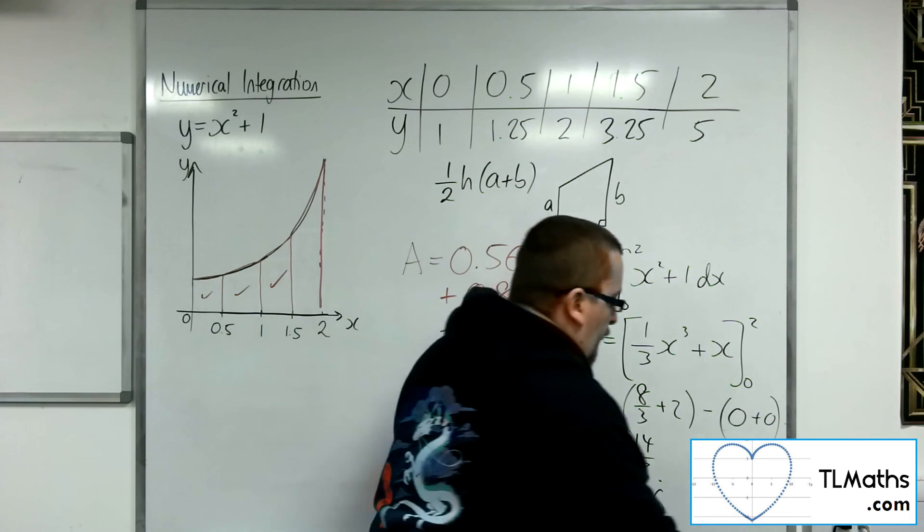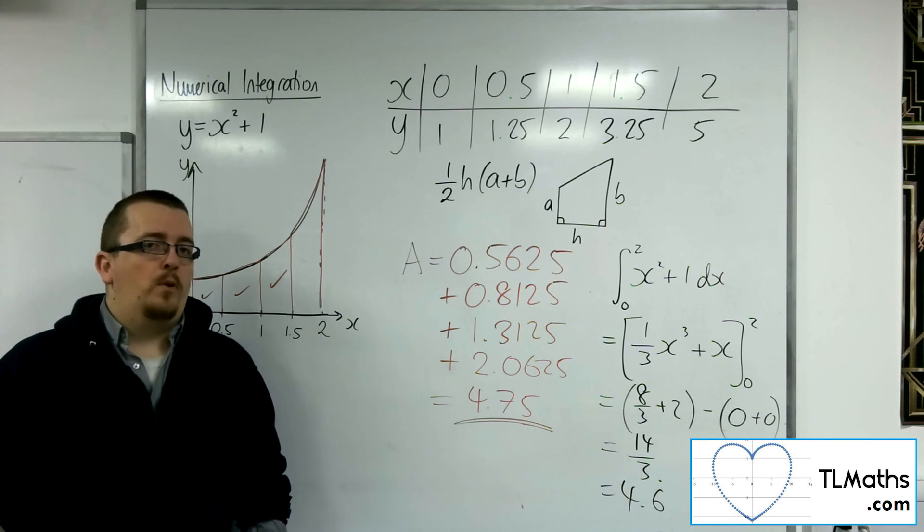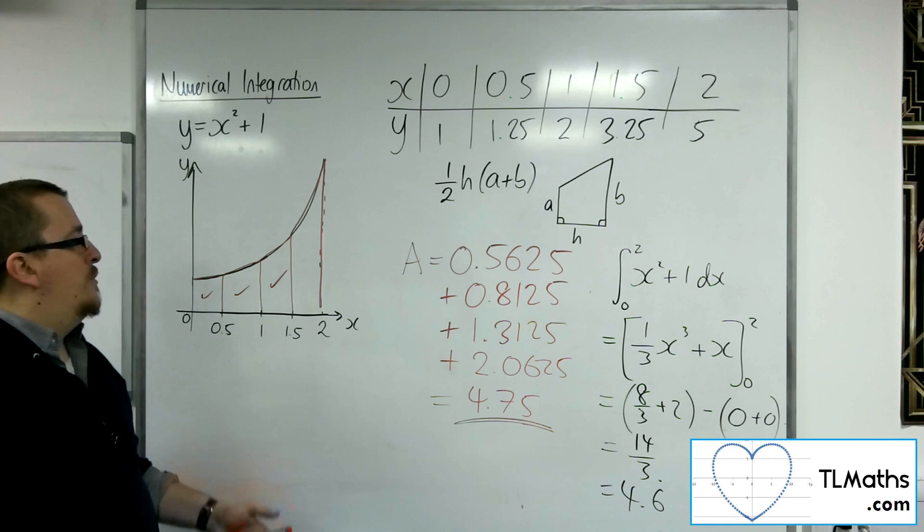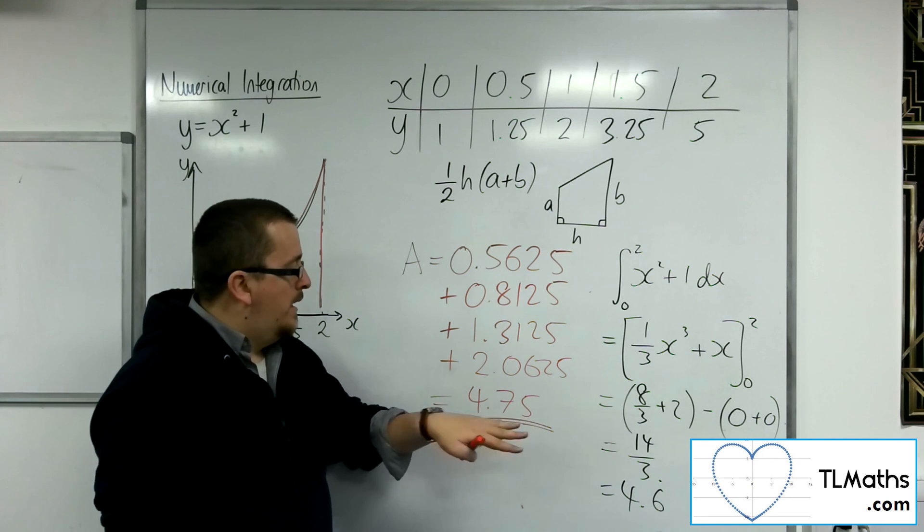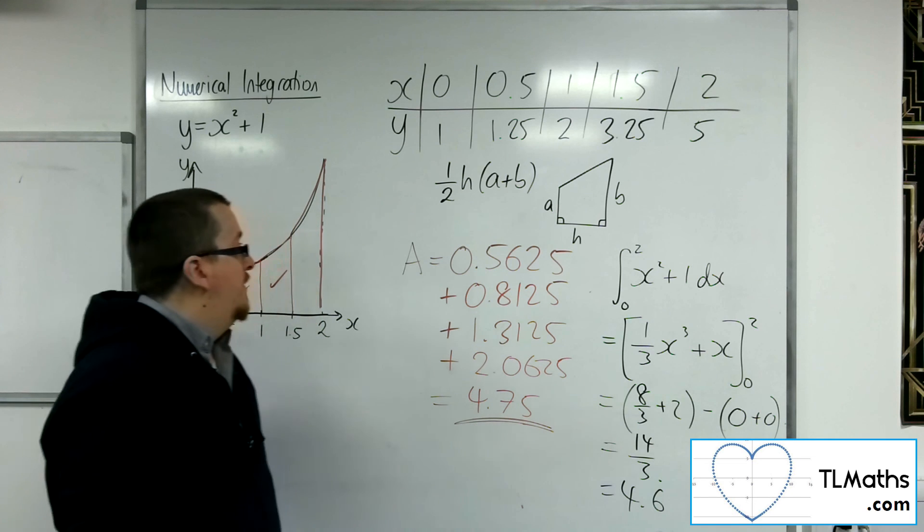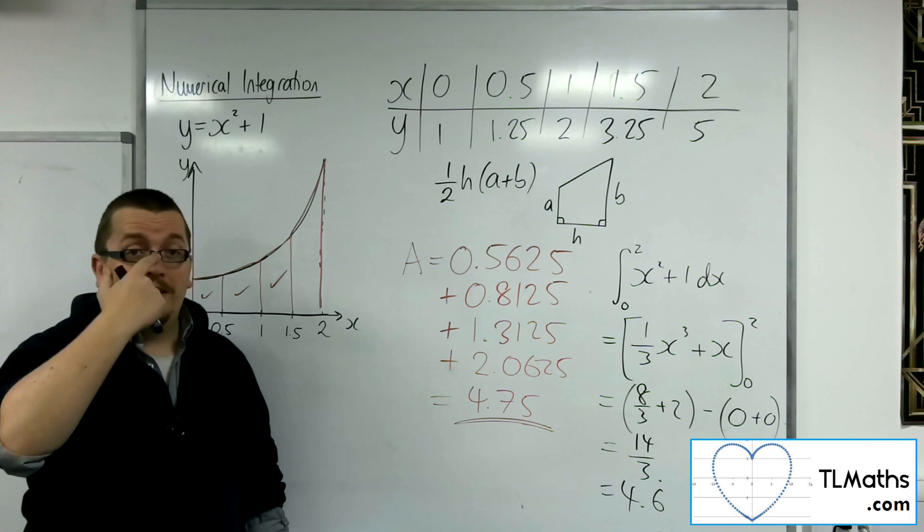So in actual fact, with only 4 strips, we've got quite a reasonable estimate for the area of that curve. And what we're seeing is that we're getting an overestimate of the curve because each of my trapeziums lies above the curve. And we'll look more at overestimates and underestimates later on in this section.